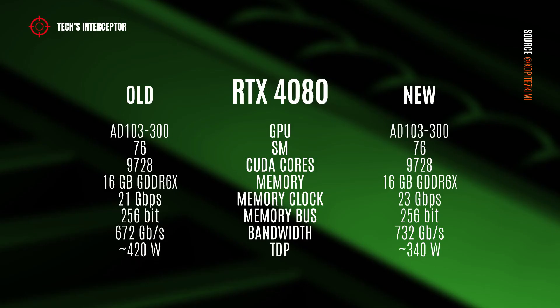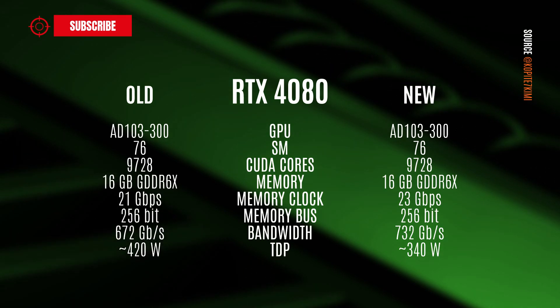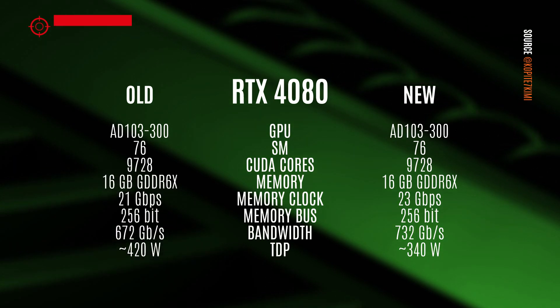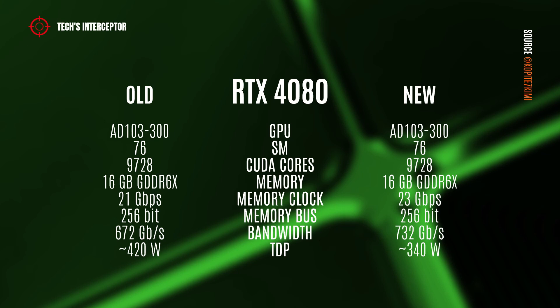The new specification reports the same number of CUDA cores as well as streaming multiprocessors, with the quantity and type of memory remaining unchanged, while the memory speed has been improved, going from 21 to 23 GB per second. This increased the memory bandwidth by 9%, reaching 732 GB per second. In addition, regarding power consumption, the TDP has been reduced substantially by 80 watts, going down to 340 watts.